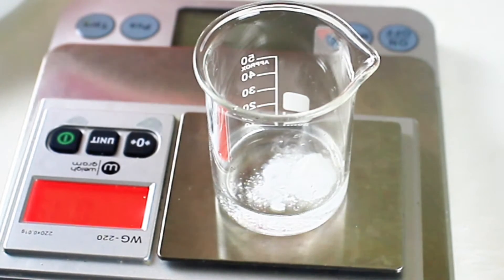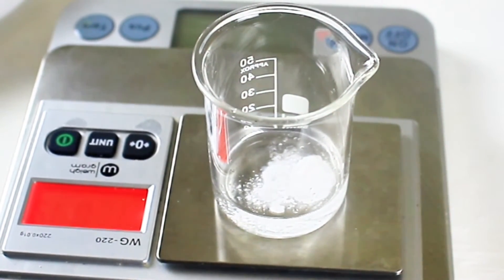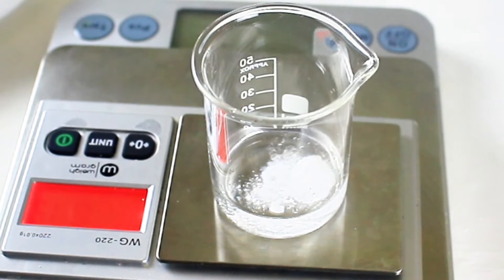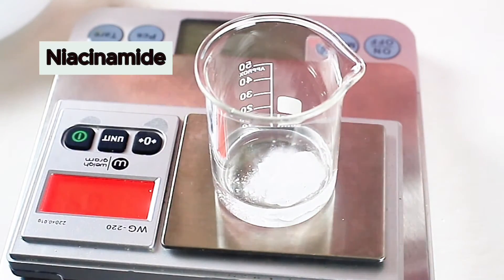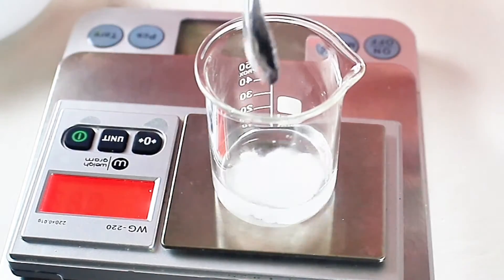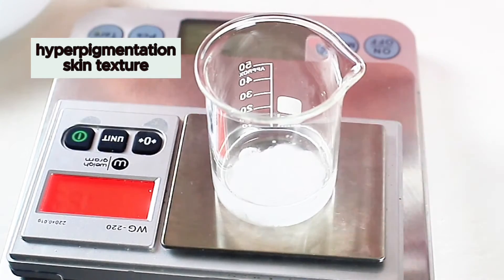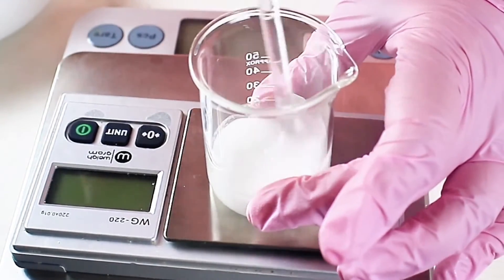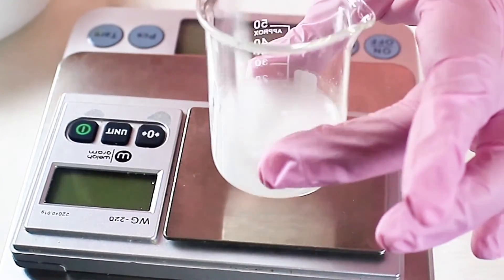Then I weigh out 0.20 grams of allantoin in the same beaker with the rose geranium hydrosol and the sodium phytate. Allantoin is an anti-irritant. And this allantoin that I'm using is nature identical, yet it is chemically synthesized. Then I measure 2.5 grams of niacinamide. This is shown to help with hyperpigmentation and skin texture.